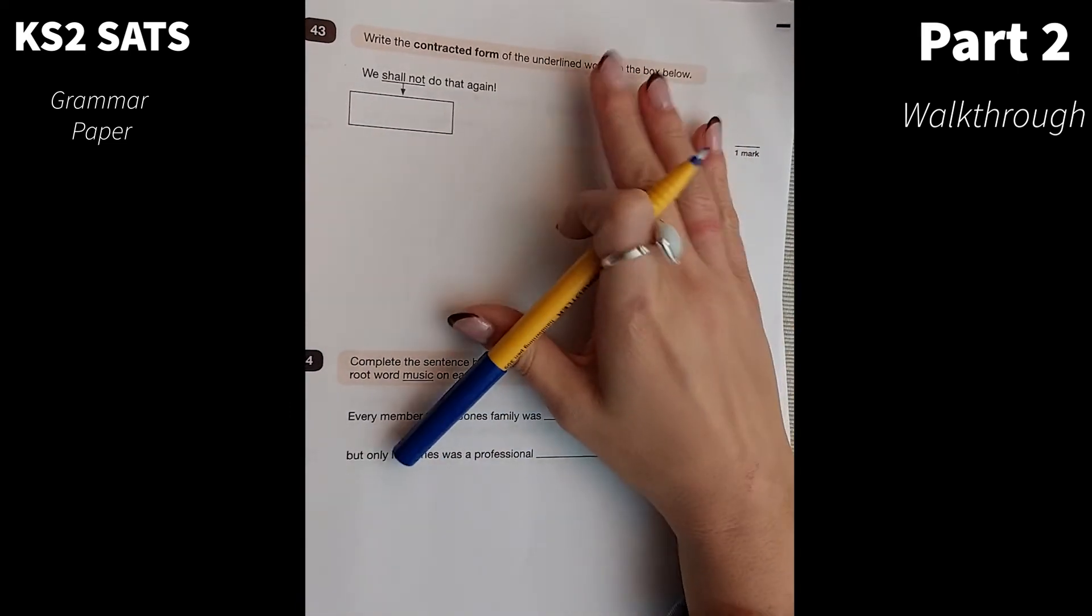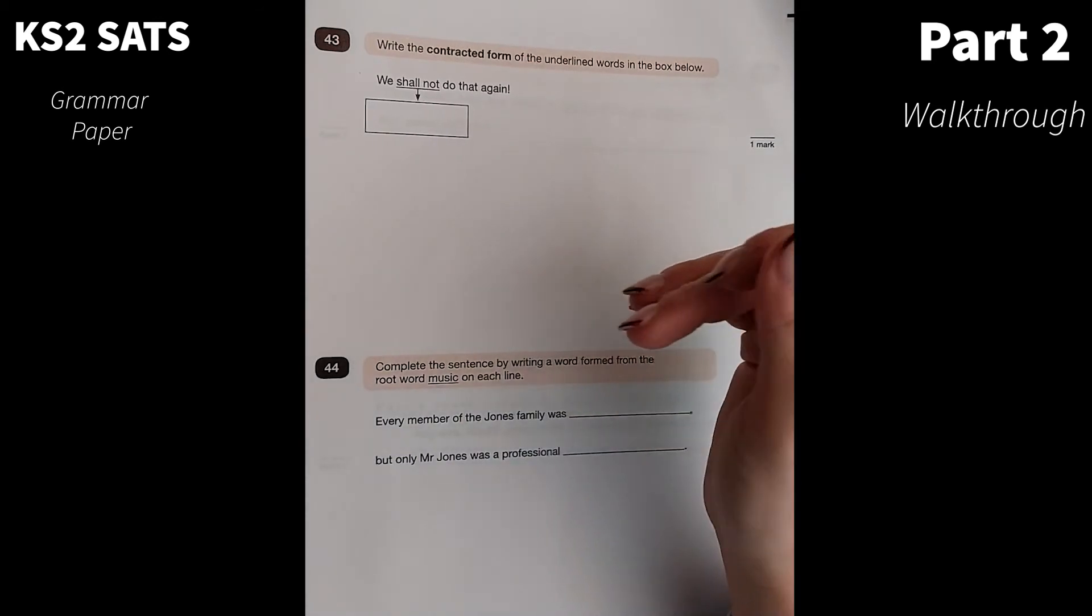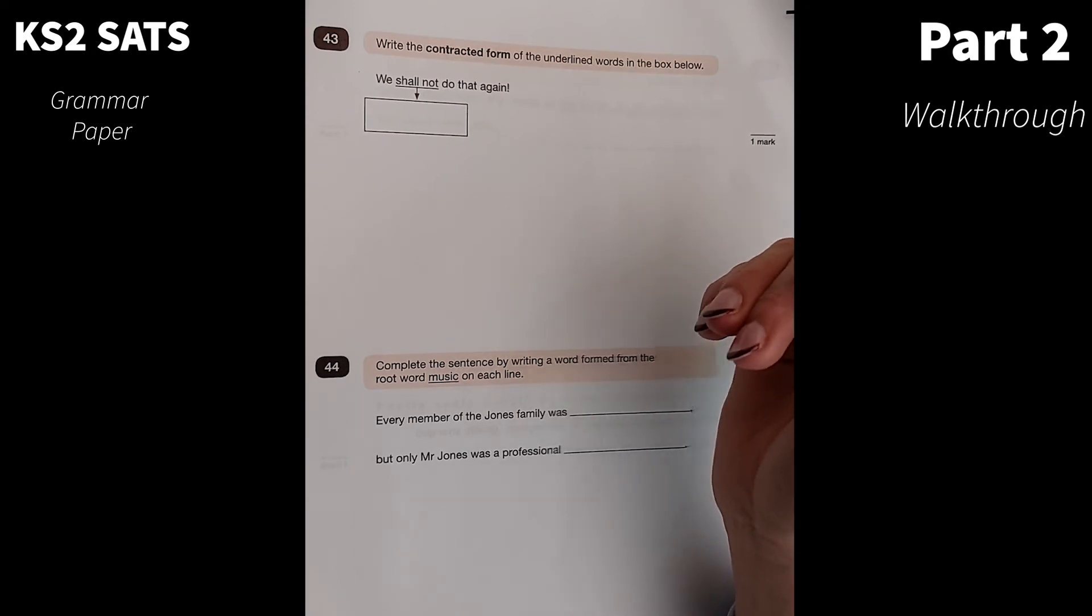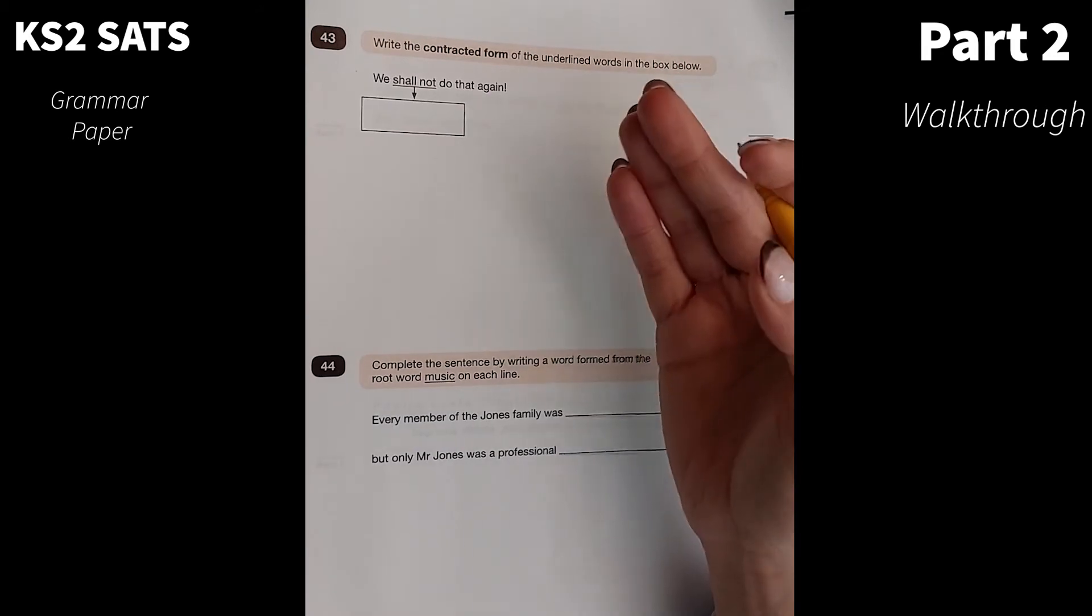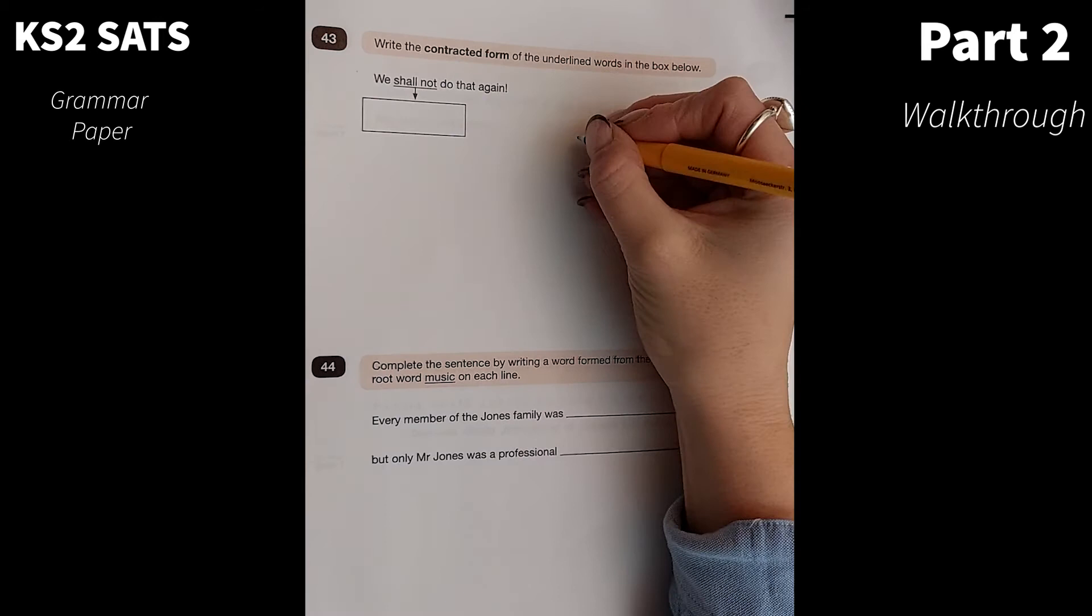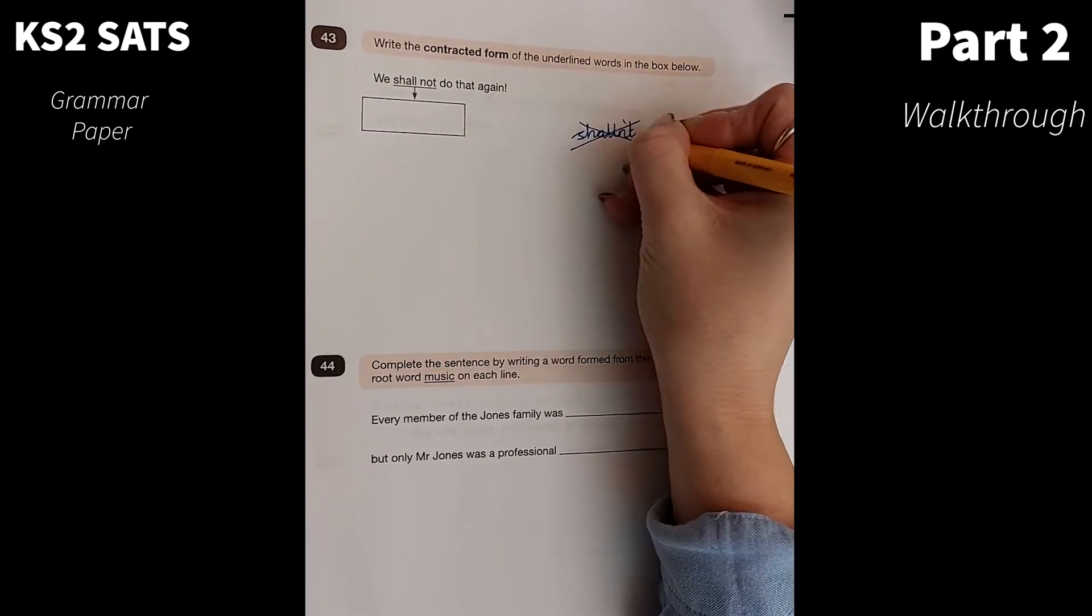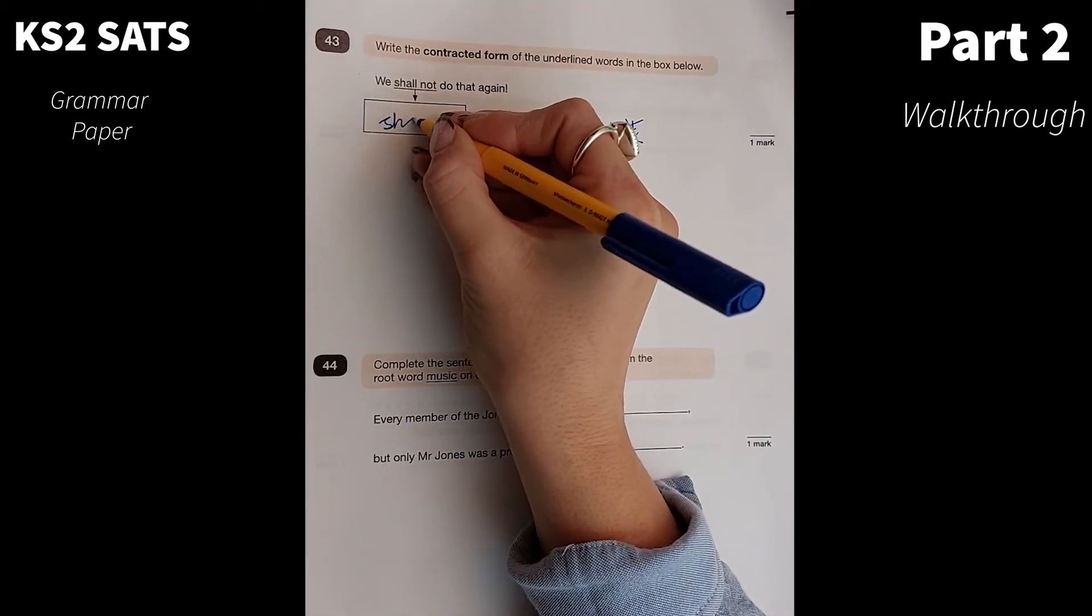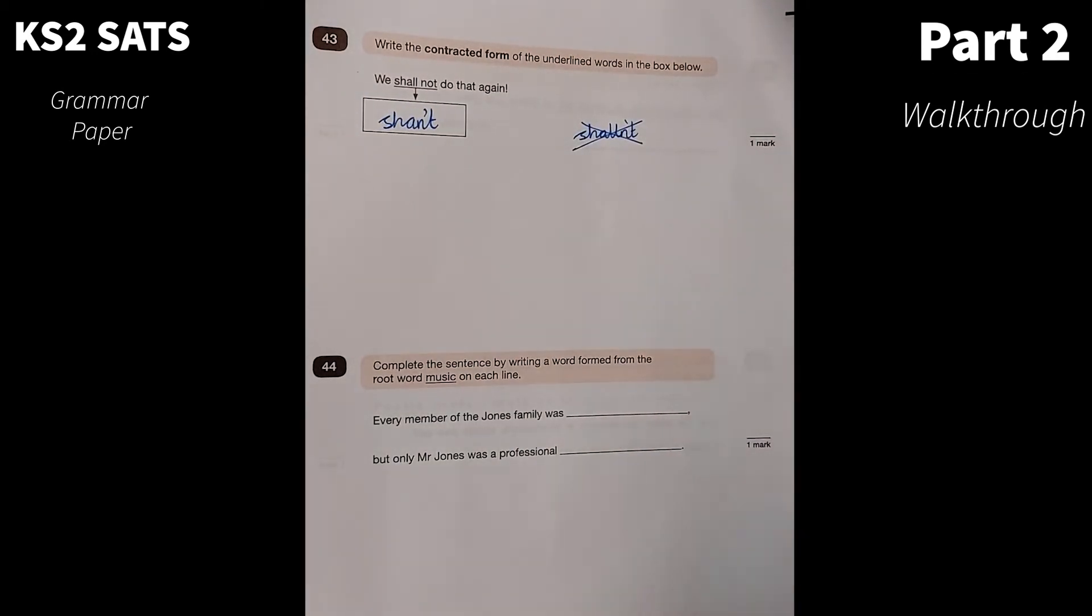I remember this question extremely well. It did throw the children when they came to it when doing these tests. Write the contracted form of the underlying words. People, I don't feel like children these days would use this contracted form. We shall not do that again. Lots of people did shan't like that, which is definitely wrong. Lots of people put shouldn't, but the correct answer is actually shan't. We shan't do that again.